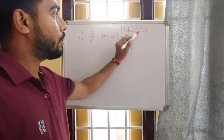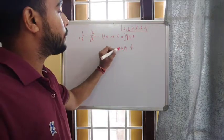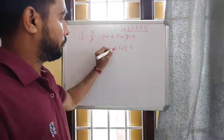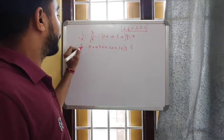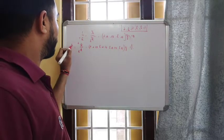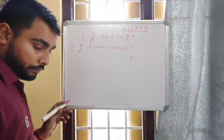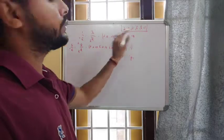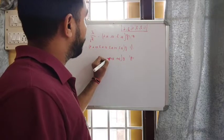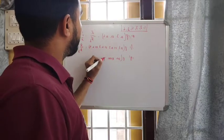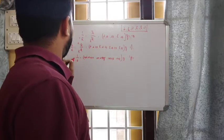Probability of getting a three or a four is two by six, which reduces to one by three. For number F, a one or two or three or four — there are four such outcomes out of six, giving two by three. For number G, an even prime number: only two is an even prime number, so probability is one by six.